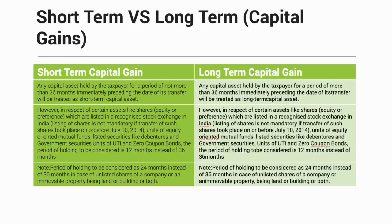Generally, the short-term capital gains threshold is 36 months, but the exception says that for equity shares listed on the National Stock Exchange or Bombay Stock Exchange, 12 months is the duration. So holdings up to 12 months are short-term capital gains, and from the 13th month onward, it becomes long-term capital gains.